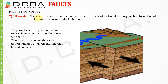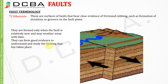Slickensides: these are surfaces of faults that bear clear evidence of frictional rubbing, such as formation of striations or grooves on the fault plane. They are formed only when the fault is relatively new and may weather away with time. When two huge rocks slide against each other along the fault plane, striations or grooves may form. If those striations are very distinct and visible, it can be said that the faulting that took place is somewhat new.